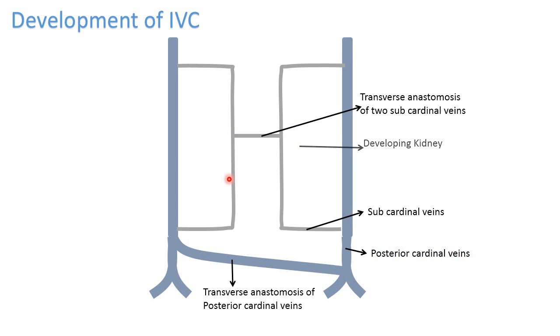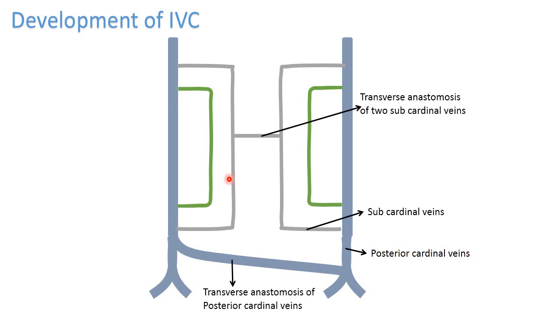As the development proceeds, two more sets of veins, indicated in green, develop — these are referred to as supracardinal veins.